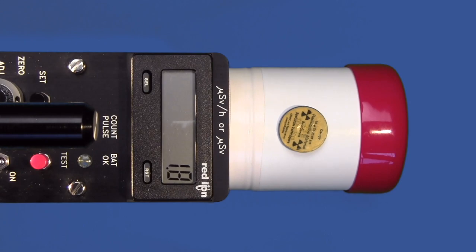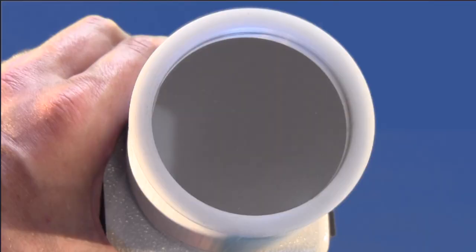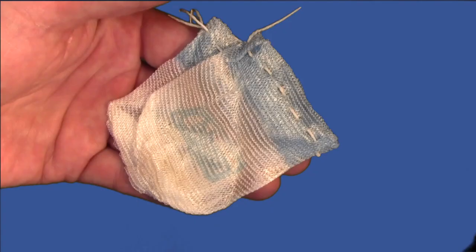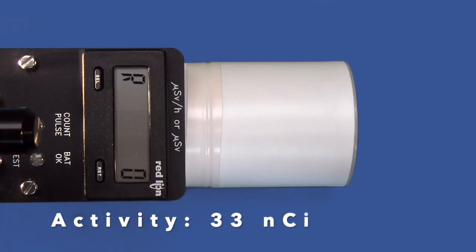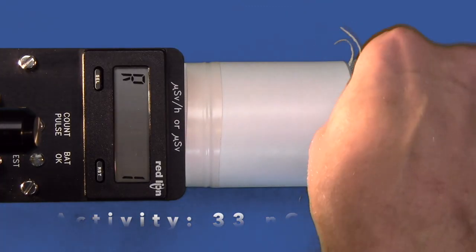Now we will have a look at alpha and beta detection. First, we remove the detector cap, which serves as a beta shield. We are using a weak thorium-232 source in rate mode. We assume the activity of this source is approximately 33 nanocuries.